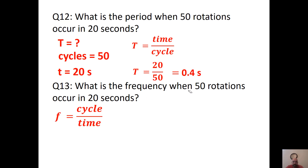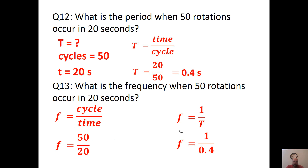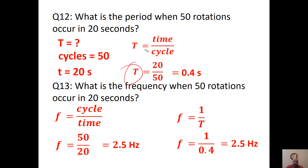What's the frequency when 50 rotations occur in 20 seconds? You can go directly to the frequency equation — cycles over time — or take the inverse of the period. Either 50/20 or 1/0.4 gives you 2.5 Hertz. It doesn't matter which approach you use — once you know period, you can just take the inverse to get frequency.